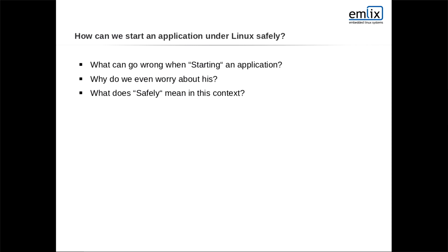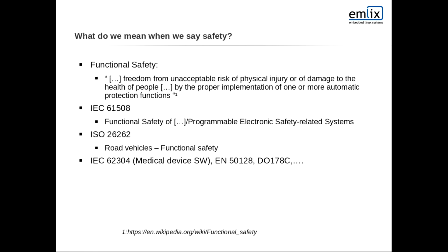When we talk about safety, we come along with the term functional safety. As Wikipedia defines it, functional safety is freedom from unacceptable risk of physical injury or damage to the health of people through the proper implementation of automatic protection functions. Because everyone understands this differently, there are many standards that define things you can do to mitigate risk — the parent norm being IEC 61508, with industry-specific derivatives like ISO 26262 for automotive, and norms for medical, trains, and planes.